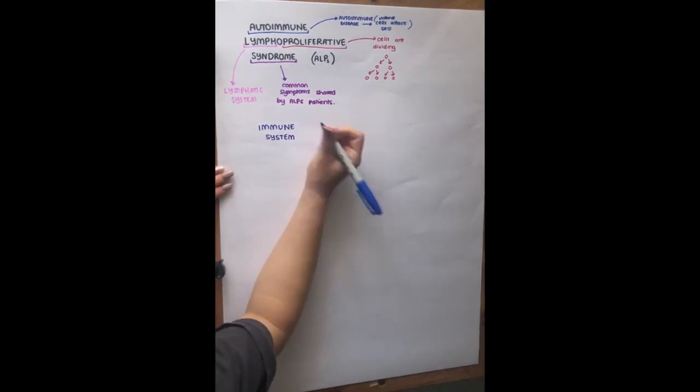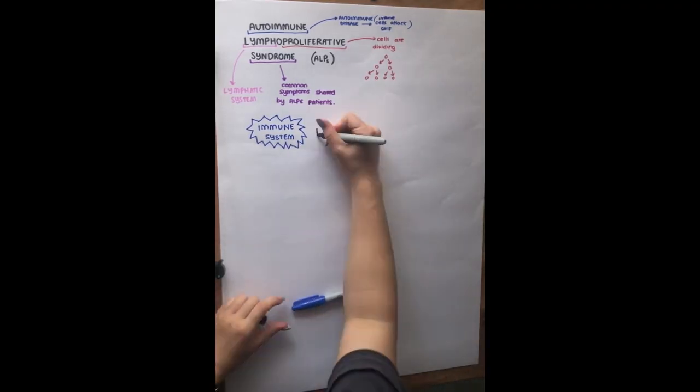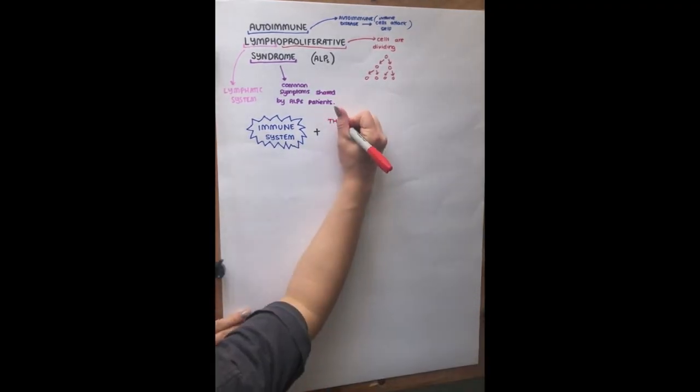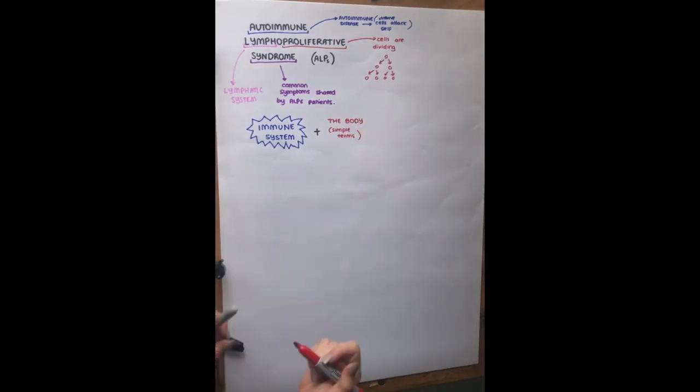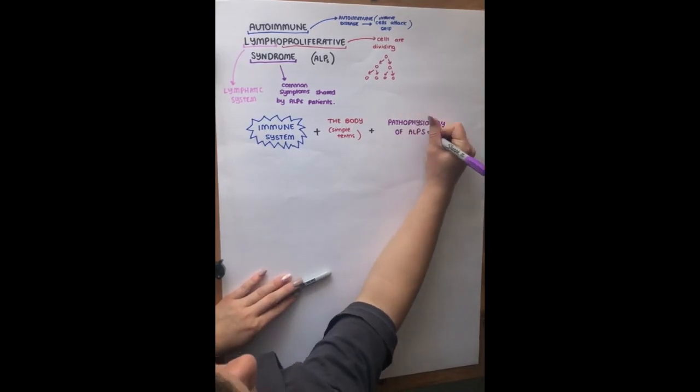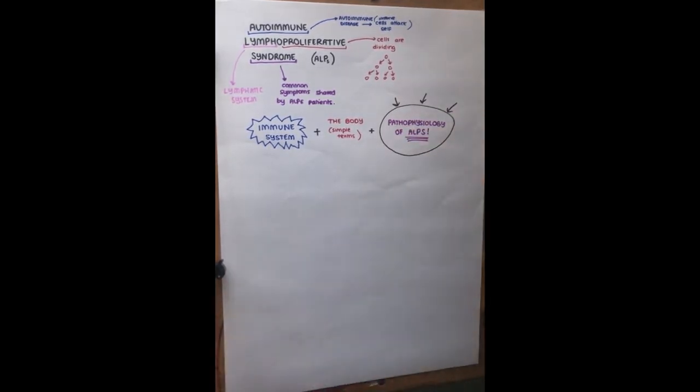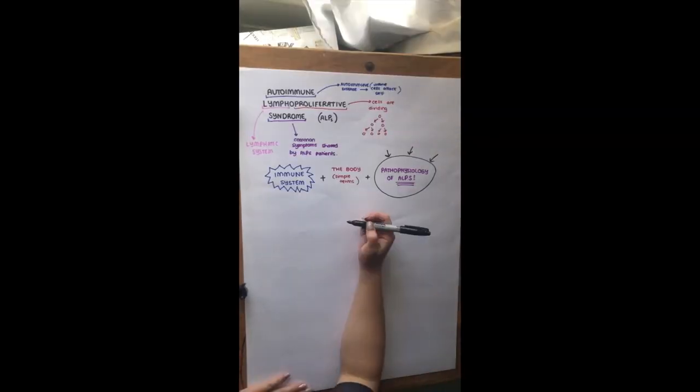So to be able to discuss ALPS, I'm going to go over three parts. So firstly, I will go over simpler terms and then I will go to the pathophysiology of ALPS and what actually causes it. So I'm going to start off with the body in simple terms, then the immune system, and then once we've understood those basic concepts, we'll go over the pathophysiology of ALPS.